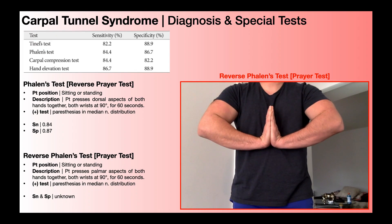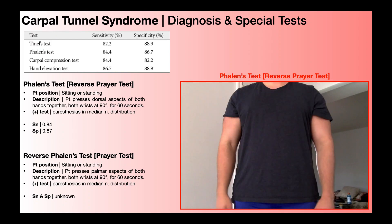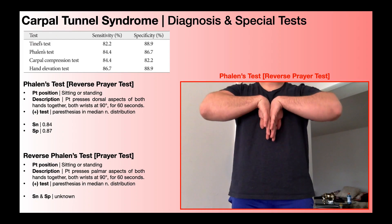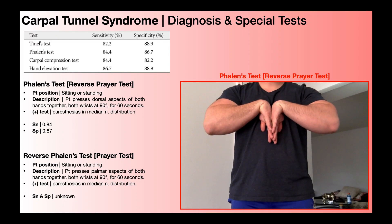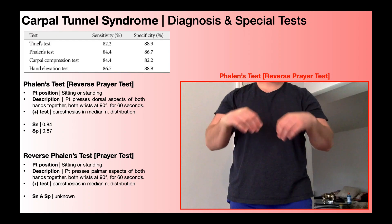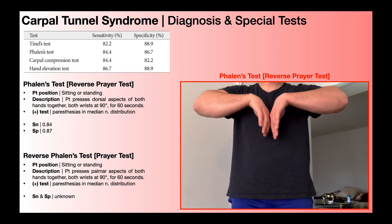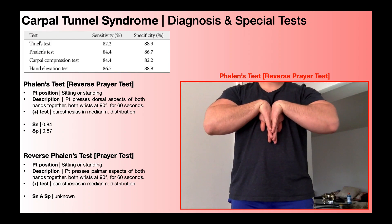Phalen's test is called the reverse prayer test because it's basically upside down compared to the prayer test. The patient is still sitting or standing, but this time they press the dorsal aspects of both hands together, both wrists at 90 degrees, and hold for 60 seconds — essentially an upside down or reverse prayer position. A positive test is reproduction of paresthesias at any point in the median nerve distribution. The sensitivity was given as 84% and the specificity is 87%, which is pretty good.